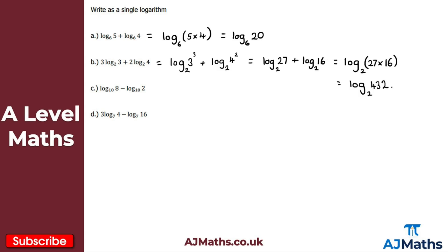For part c, we've got log 8 base 10 minus log 2 base 10. Because we have the same base and we're subtracting, we use the division law. This gives log(8 divided by 2) base 10, which is log 4 base 10.